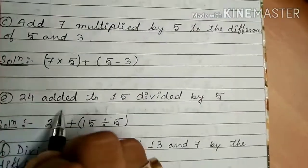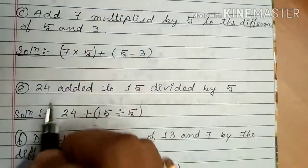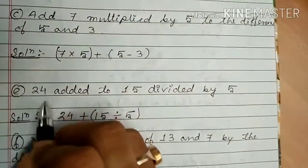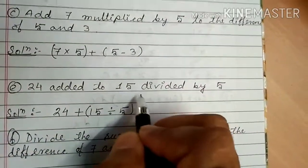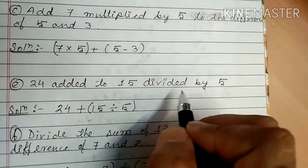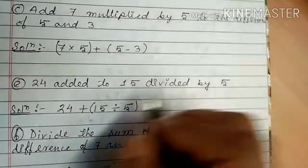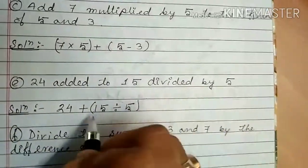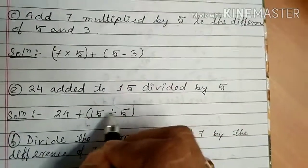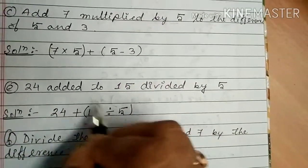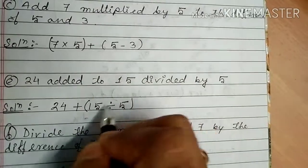Fourth: '24 added to 15 divided by 5.' We have to add 24 with 15 divided by 5. So 15 divided by 5 we write as 15/5. And we have to add 24 with this: 24 plus 15/5, okay.